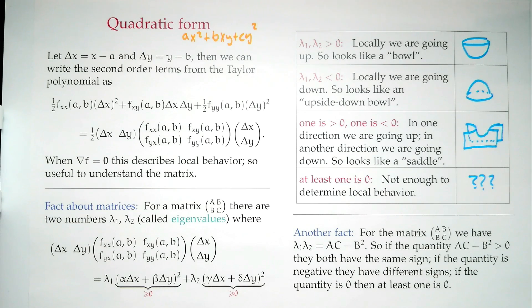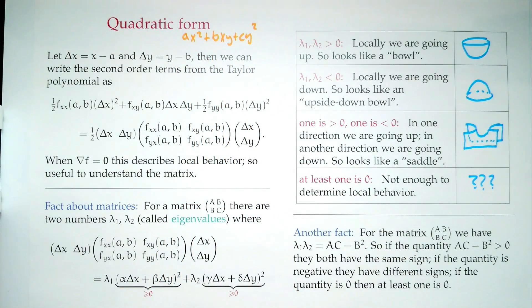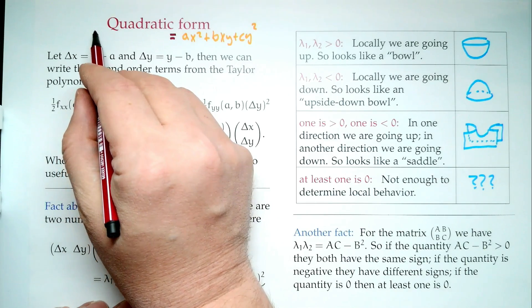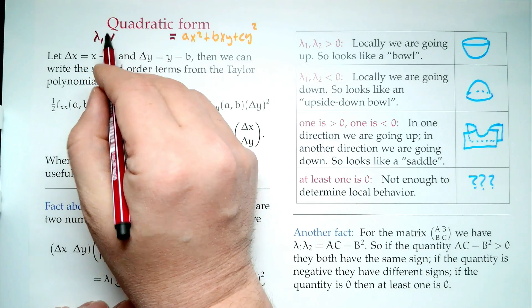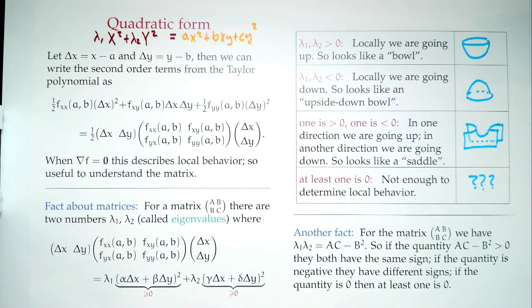We won't go too much into it, but the theory says: if you have a quadratic form — something that looks like ax² + bxy + cy² — it turns out you can always rewrite this as λ₁X² + λ₂Y², where capital X and capital Y are found by taking appropriate combinations of little x and little y.